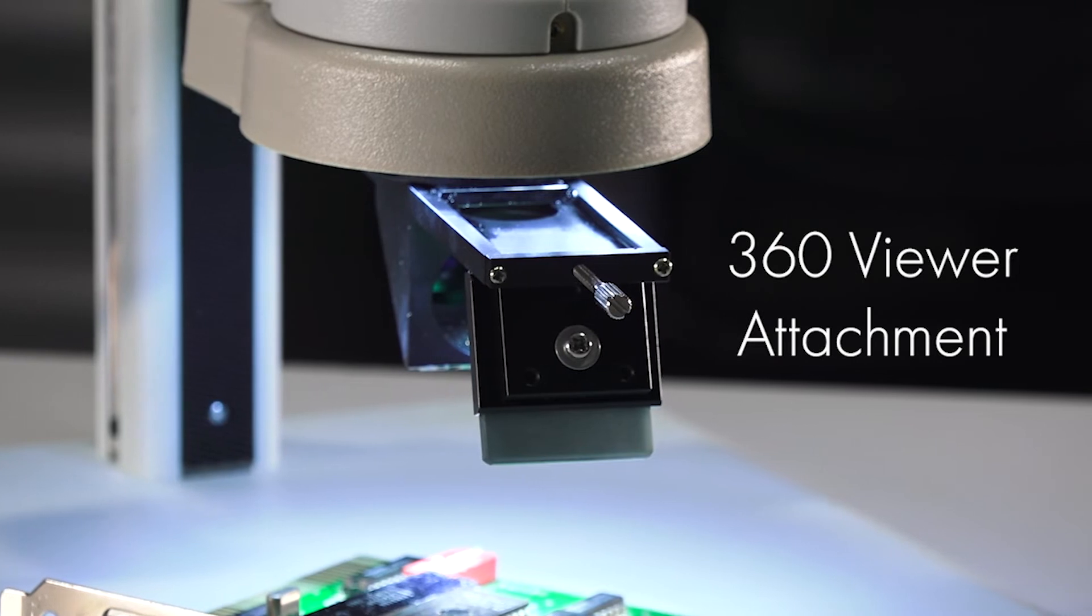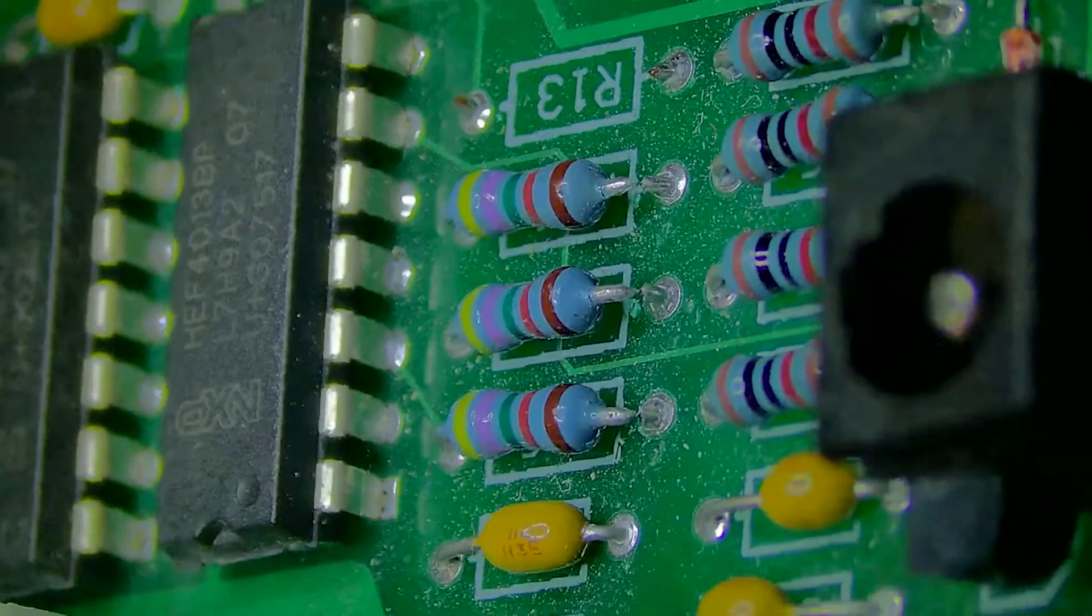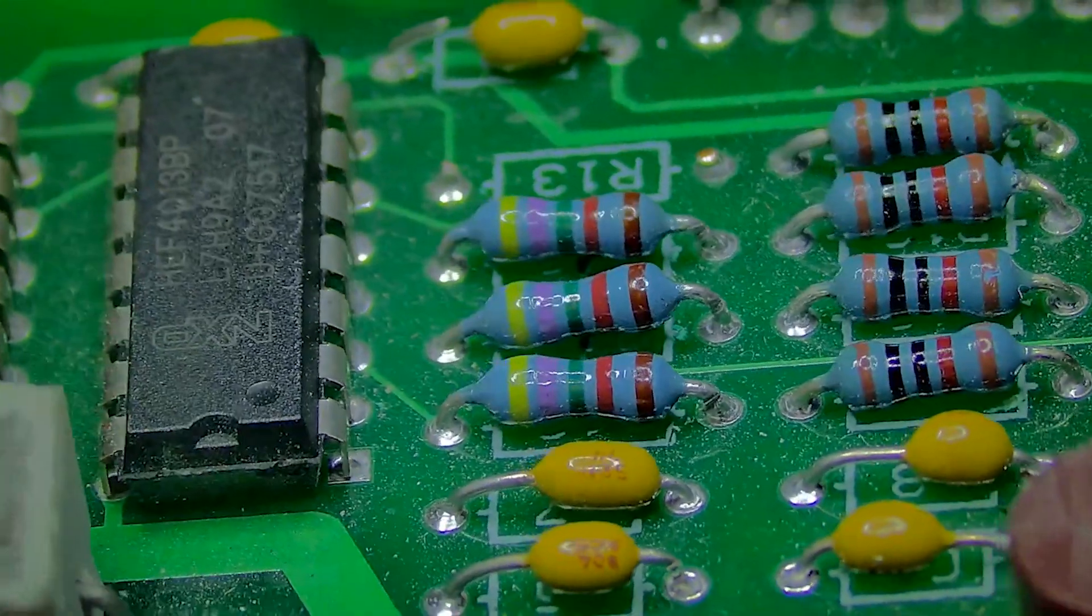The MicroView 3D viewer attachment provides an angled view of objects, ideal for printed circuit boards and other multi-layered pieces.